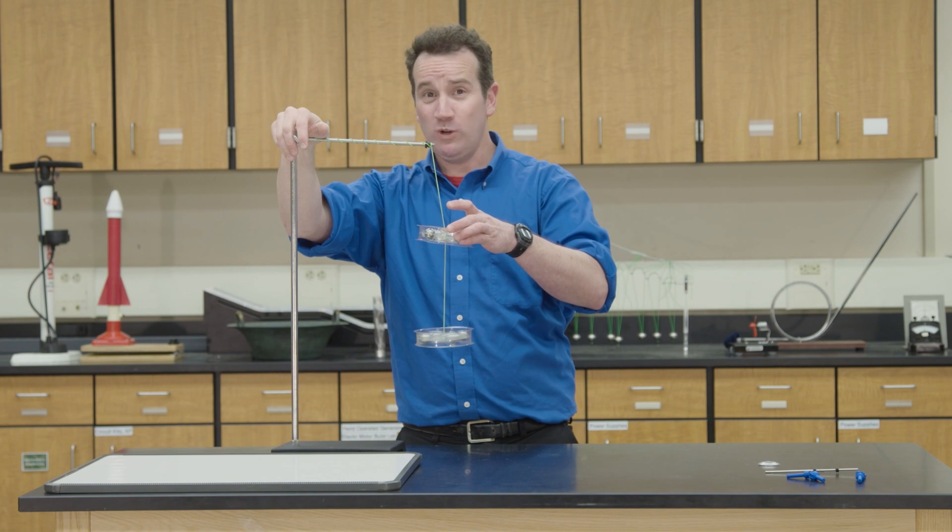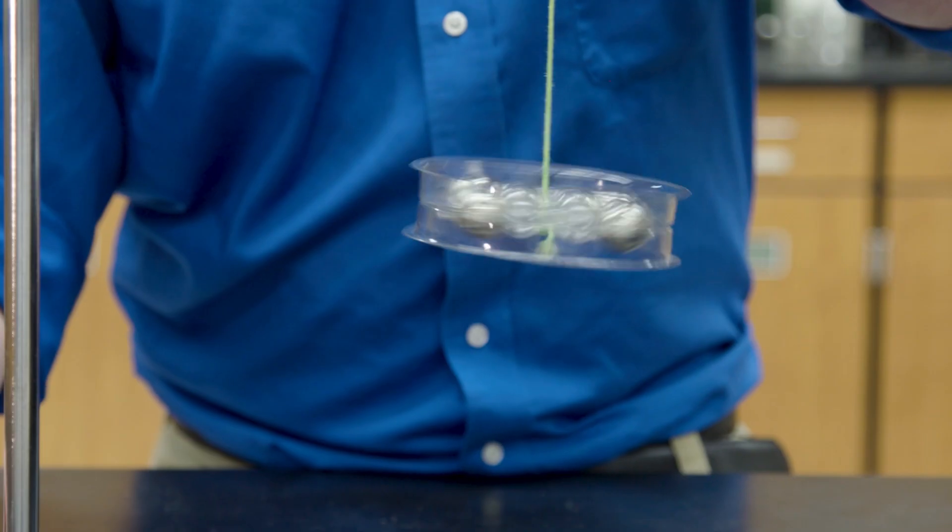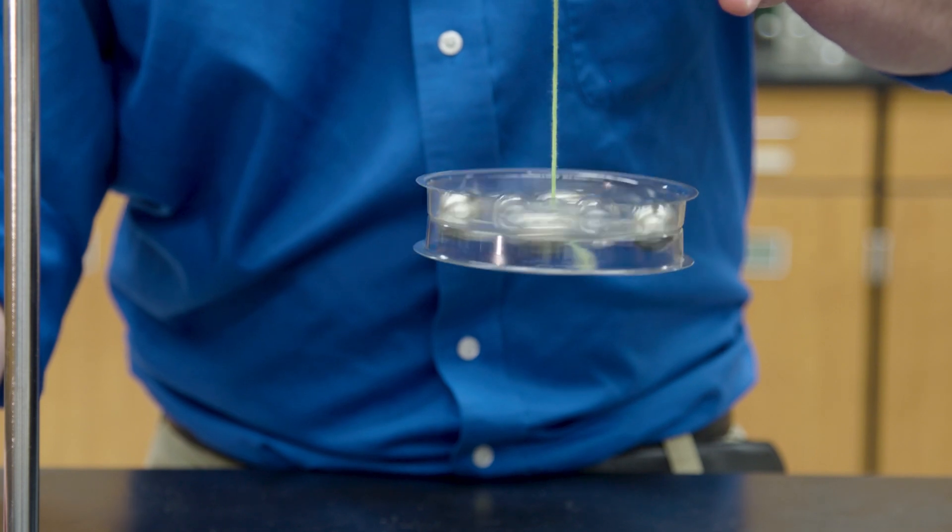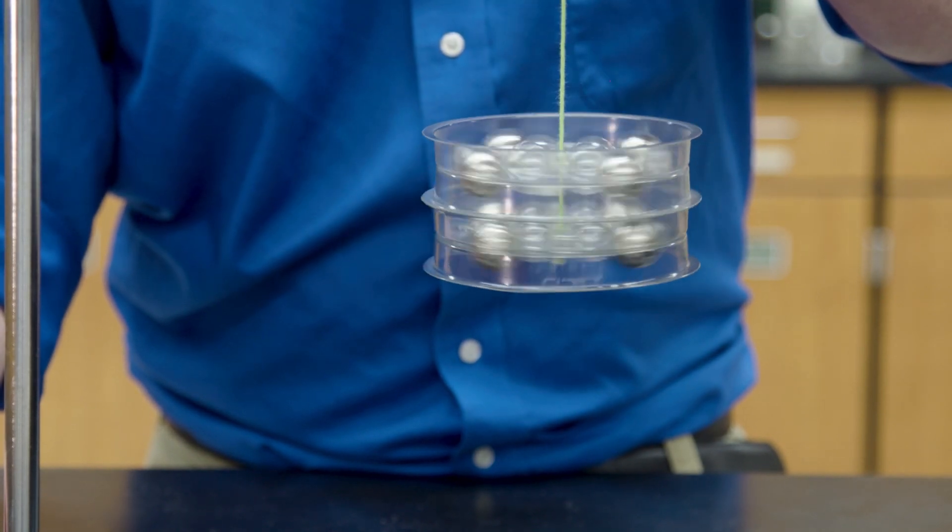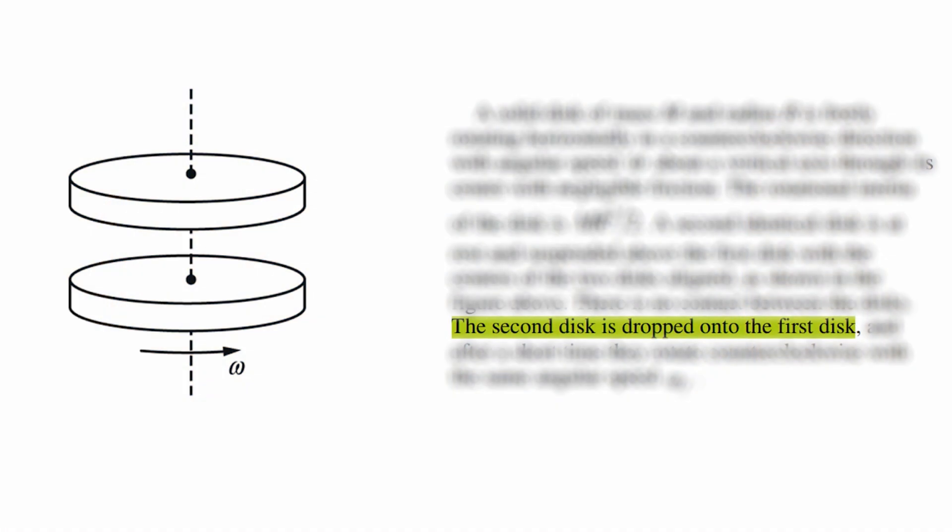In this case, I'm going to be dropping one disc on top of another while it's spinning. And you can see that the rate of rotation is cut in half. This is a demonstration of the conservation of angular momentum, and it's an extremely common question on the AP Physics tests you might be teaching.